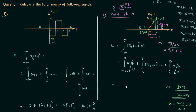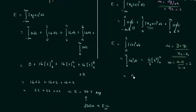Now we solve the integration. The total energy E equals the integral from 0 to 2 of |2t|² dt = integral from 0 to 2 of 4t² dt. Performing the integration gives 4·[t³/3] from 0 to 2 = (4/3)·(8 − 0) = 32/3 joules.